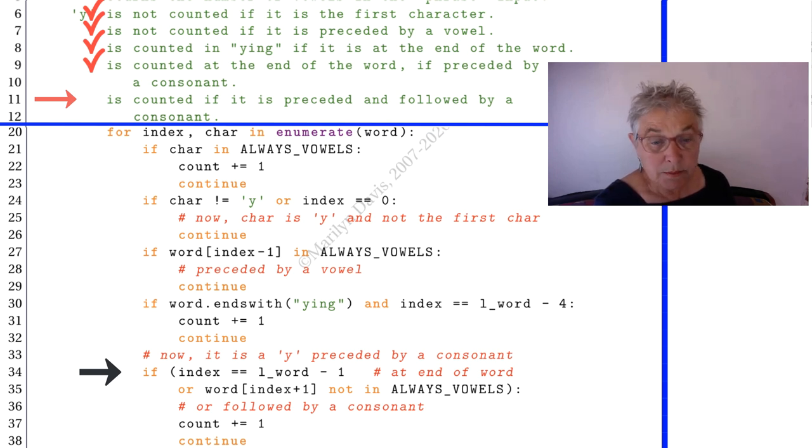And then the last one is it is counted if it is preceded and followed by a consonant. We know at this point, because if this was true, we would never have gotten here. But if it's false, this gets evaluated. So we know that we're not at the end of the word. We can look at what follows it. And if it's a consonant, then we count it. That's it.